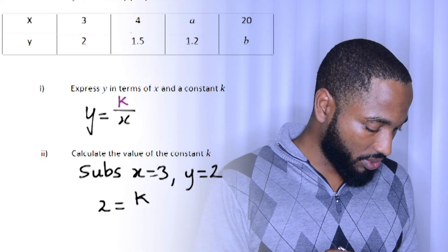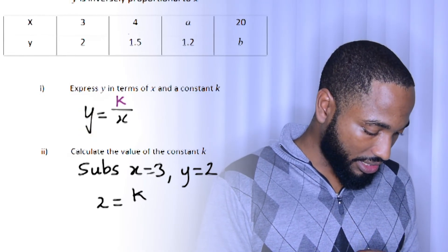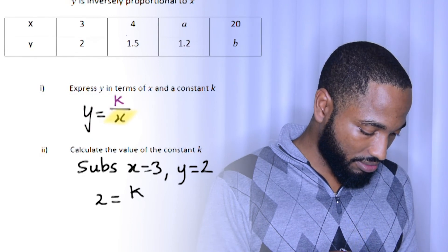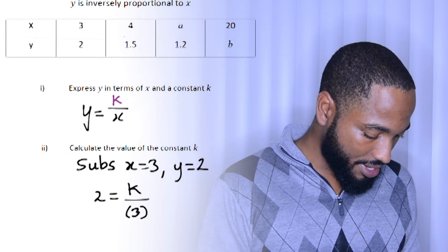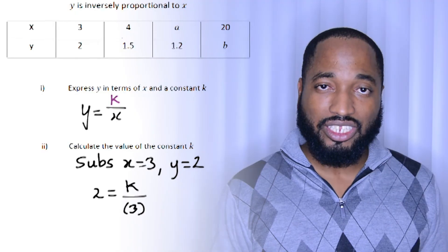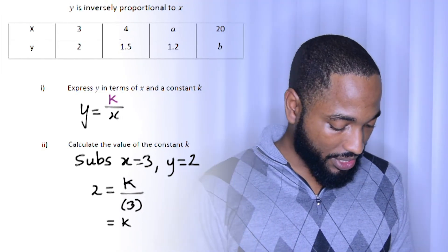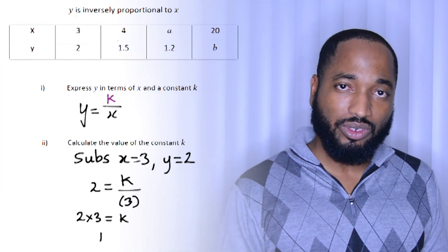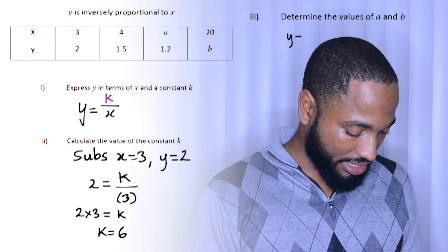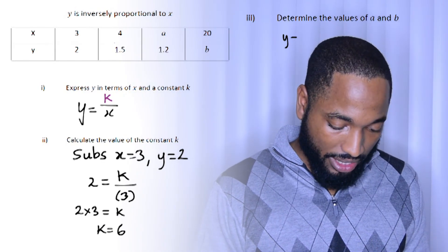So substitute y is 2 and x is going to be 3. And that just leaves us to find for k. K is going to be 2 times 3. And that's going to give us a nice little 6. Alright, let's go on to the next part.